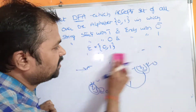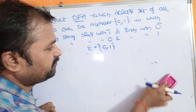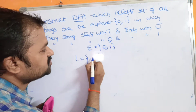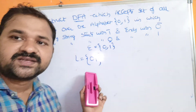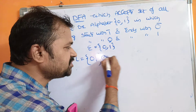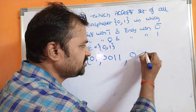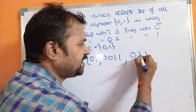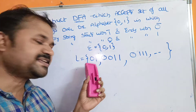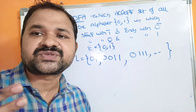Now let us see the second example. If we understand the first example, writing the DFA for the second example becomes quite easy. The second example is: every string starts with 0 and ends with 1. The minimum string is '01'. In between we can have any number of 0s and 1s — there is no constraint. The minimum string '01' contains 2 characters, so our DFA will contain 2 plus 1, three states.